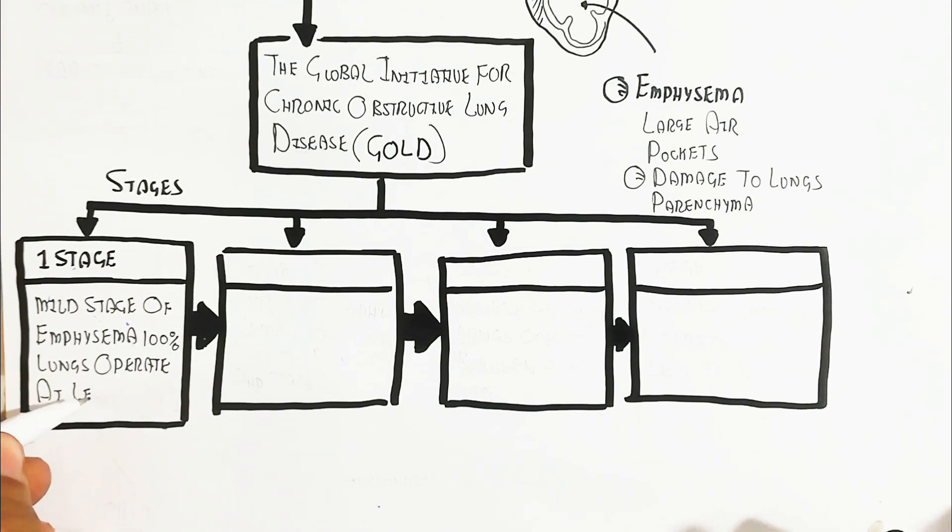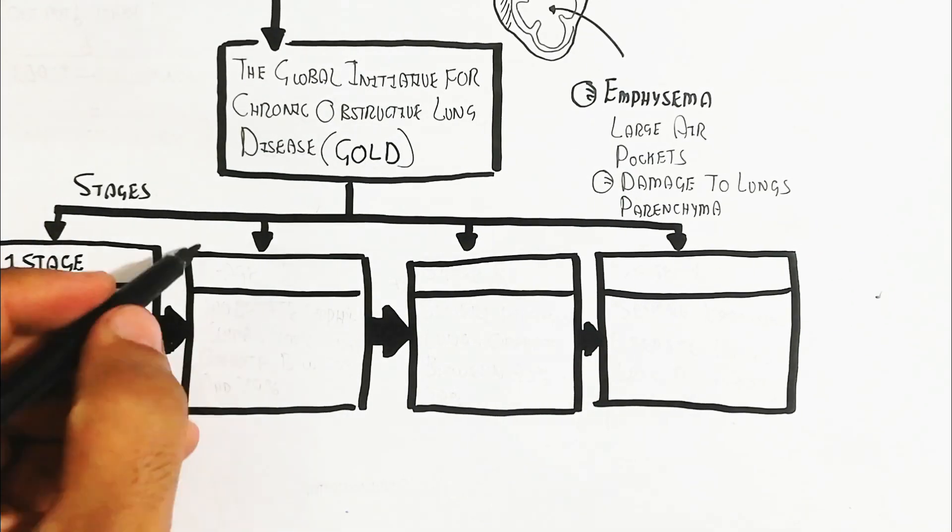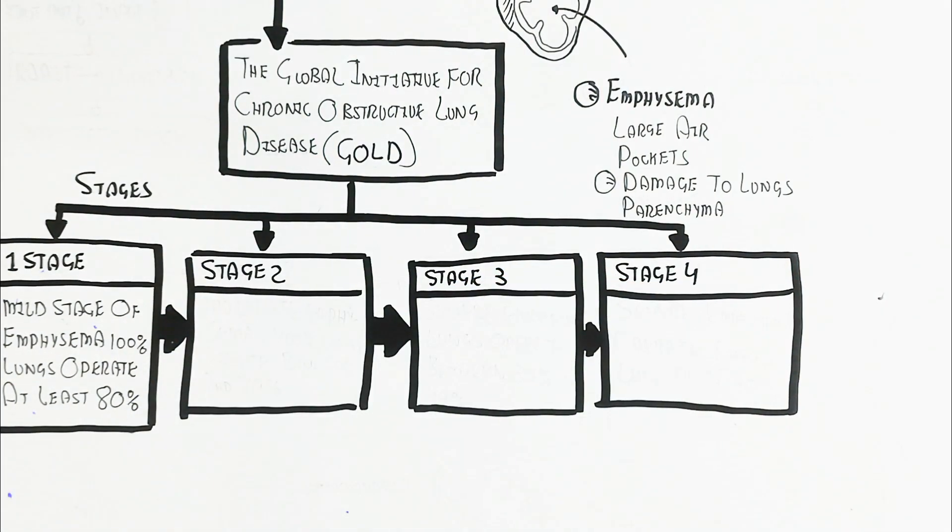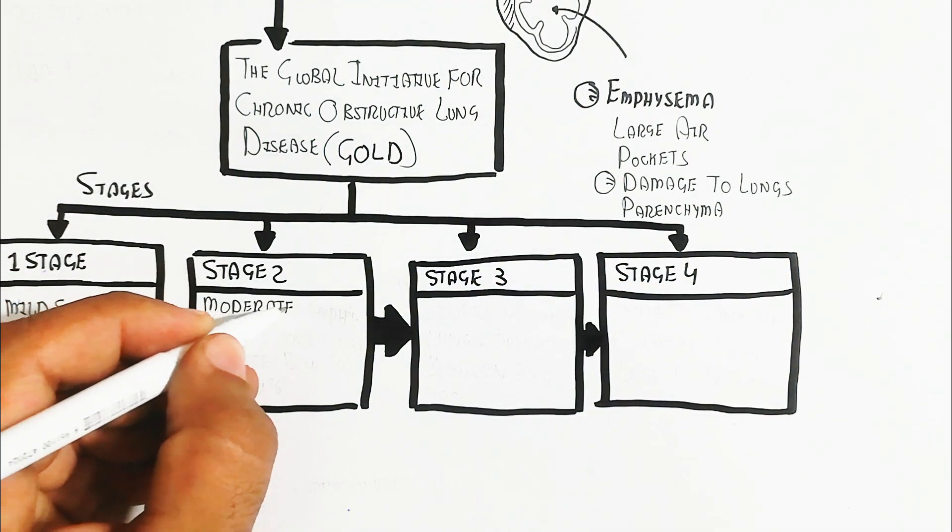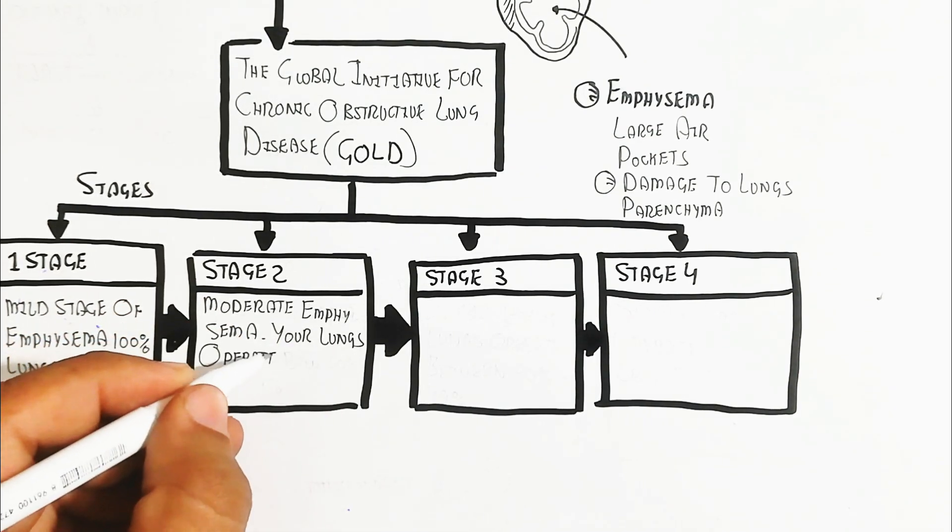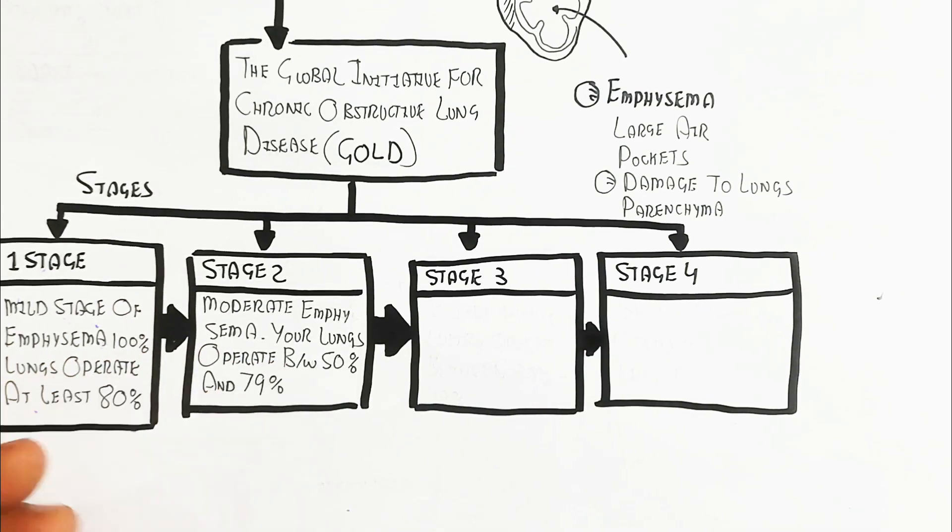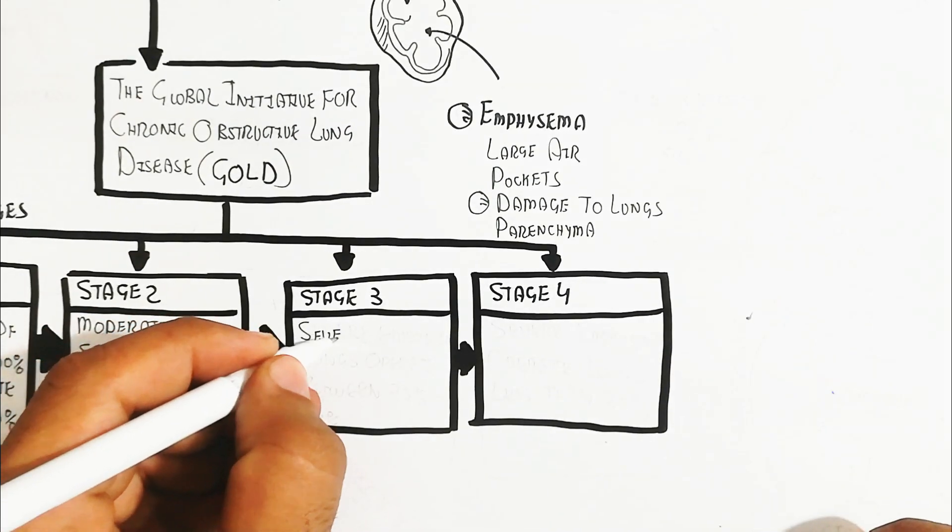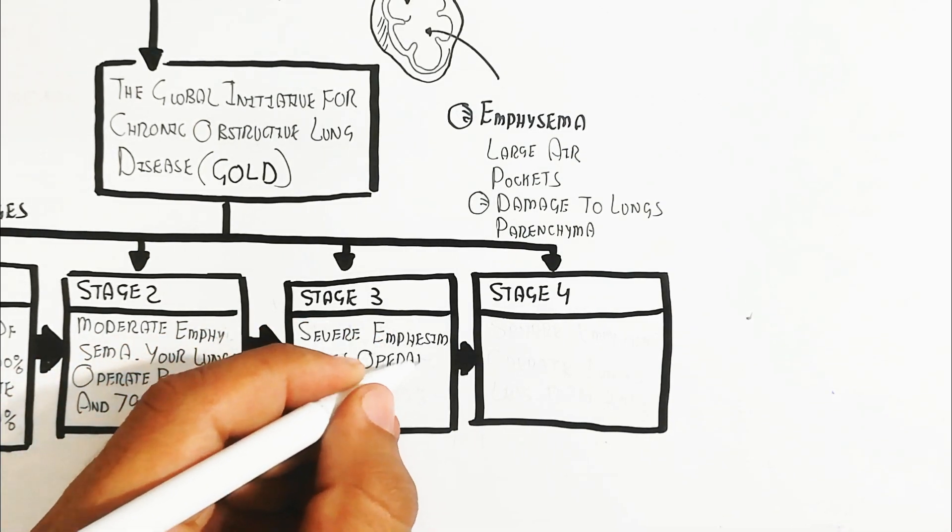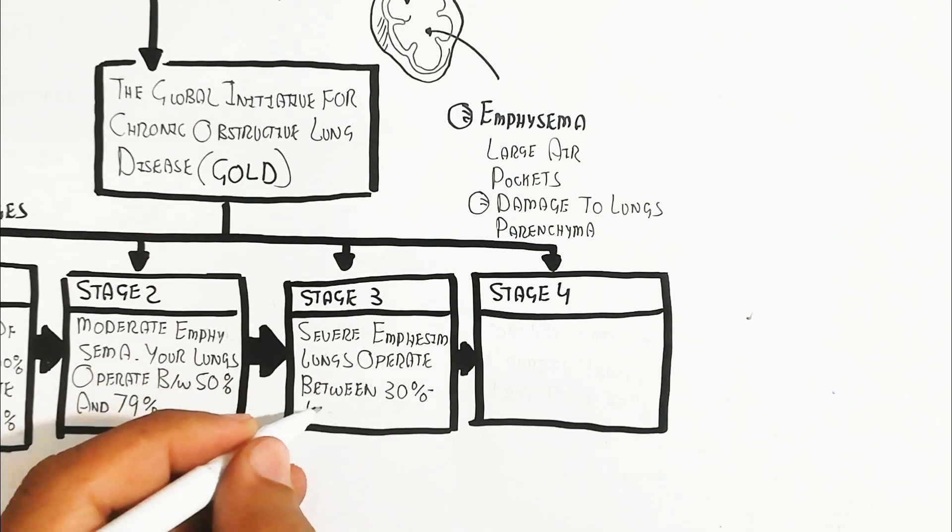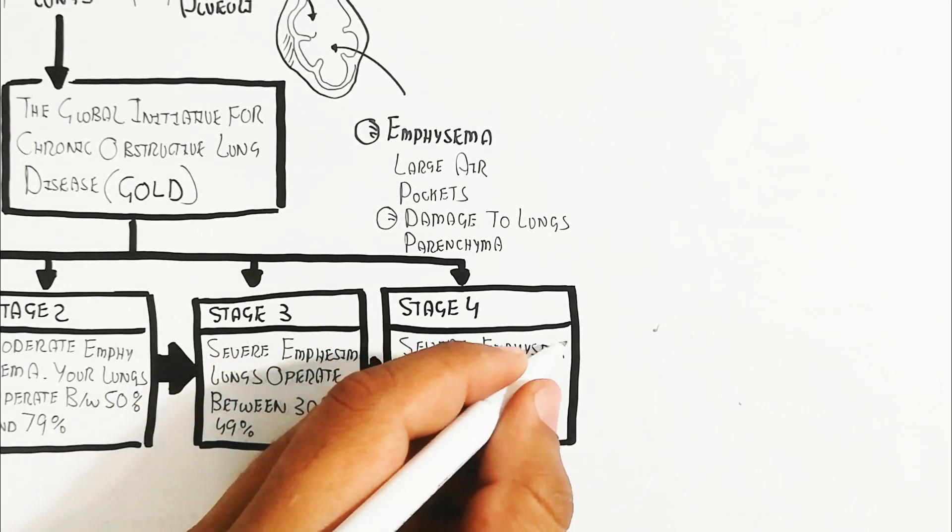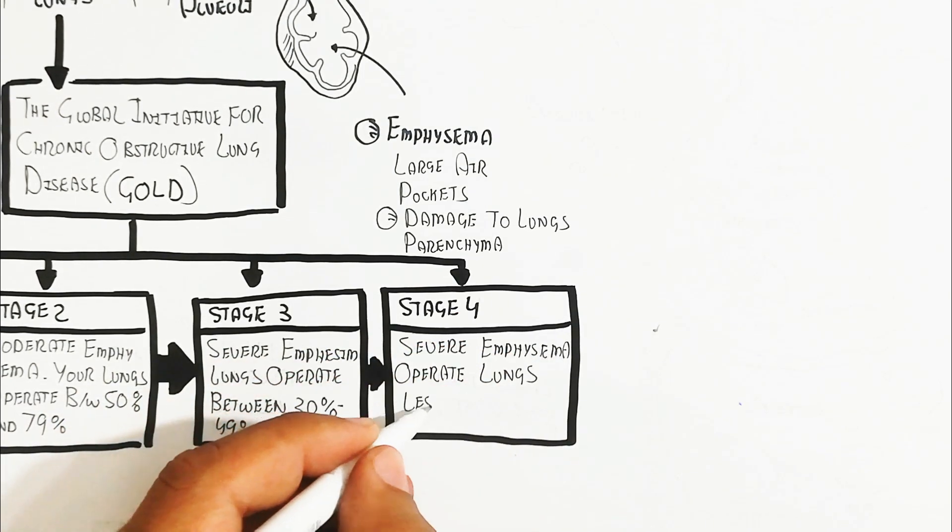Stage two is moderate emphysema where lungs operate between 50-79%. Stage three is severe emphysema with lungs operating between 30-49%. Stage four is very severe emphysema with lungs operating less than 30%.